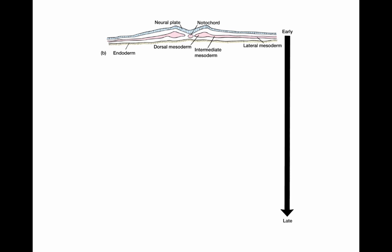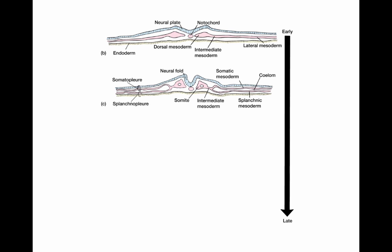As this mesoderm starts to form, it separates initially into three divisions. One part spreads out over the egg mass as the lateral plate mesoderm. Another chunk forms medially as the intermediate mesoderm, which gives rise to the urogenital system. And then right alongside the notochord in the center is a rod of tissue called paraxial mesoderm, which starts to separate into little balls called somites.